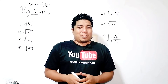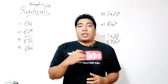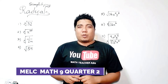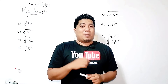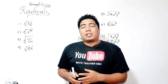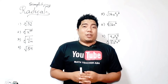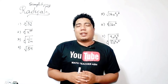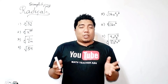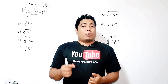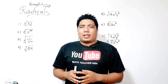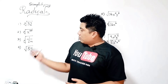Welcome to another session here in Math Learning with Sir Ash. Today we're going to discuss the most essential learning competency based lesson for quarter two of grade nine mathematics, which is all about simplifying radicals. In simplifying radicals, you will just be applying all what you have learned in the law of radicals. We have the four basic laws and also the fifth law which is rationalization, applied when we encounter a radical sign in the denominator side.